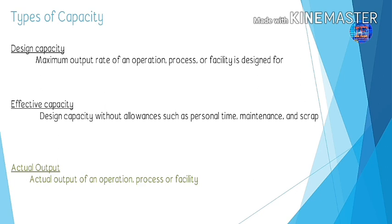There are two types of capacities: the first is design capacity and the second is effective capacity. Design capacity is the maximum output any operating unit or machine is designed for. Effective capacity is the output after reducing personal time and giving allowances. Actual output is how much we are actually producing. Remember these three — design capacity, effective capacity, and actual output — because they are used in calculating efficiency and utilization.